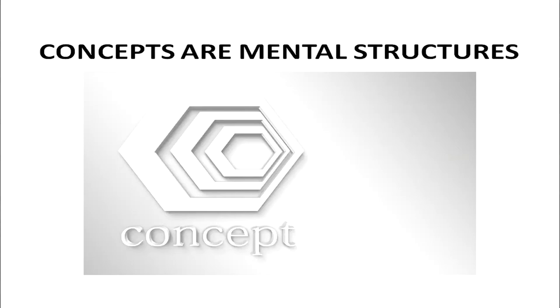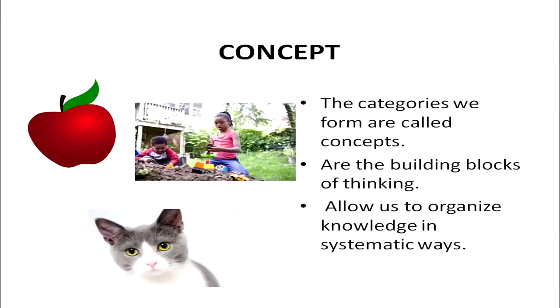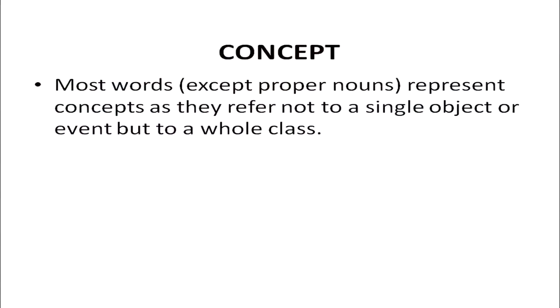What are concepts basically? Concepts are actually known as mental structures. The categories we form are called concepts. For example, we have formed a category of human being, an animal, or a fruit. These concepts are the building blocks of thinking and they allow us to organize knowledge in a systematic way. Most words, except proper nouns, represent concepts as they refer not to a single object or event but to a whole class.